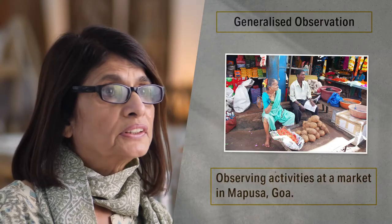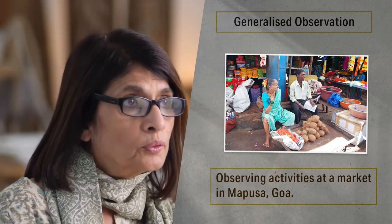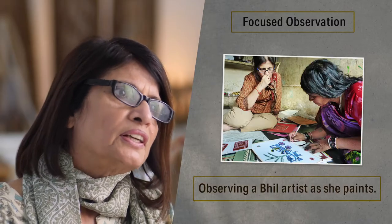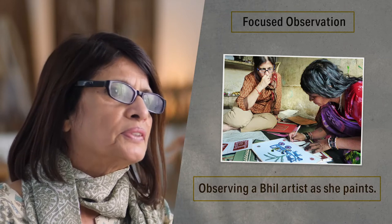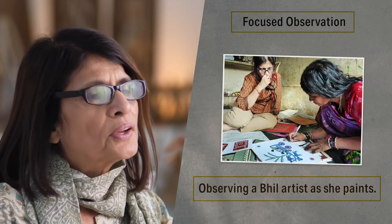Generalized observation is to observe everything that is taking place around us with equal focus. This applies to early research when we are just about understanding the scenarios and not quite certain what is more important to observe. Observing people shop in a mall is one example. Focused observation is to limit our attention to activities or events that are only related to the phenomena we are studying.